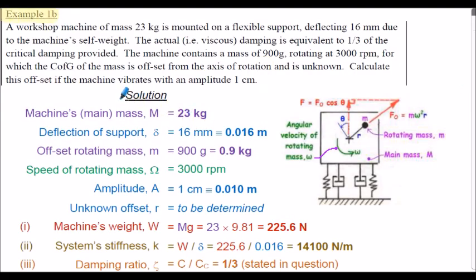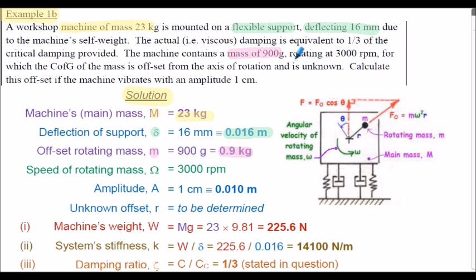So example 1b, here's the commencement of the solution. As always, extract the information from the question. The machine has a mass of 23 kilograms, so capital M is 23 kilograms. The flexible support deflects 16 millimetres under the machine's self-weight, so deflection delta is 0.016 metres. The offset mass is 900 grams, so lowercase m is 0.9 kilograms. The rotational speed of the offset mass is 3000 rpm, so capital omega is 3000 rpm. And the machine vibrates with an amplitude of one centimetre, so capital A for the amplitude is 0.01 metres. In this problem, we've got to find the unknown offset, symbol R. So the radius is to be determined.